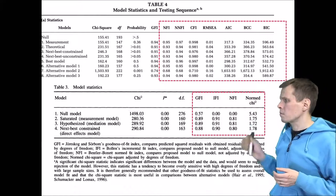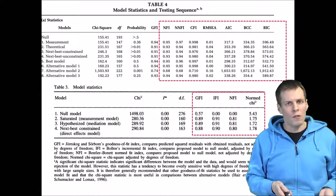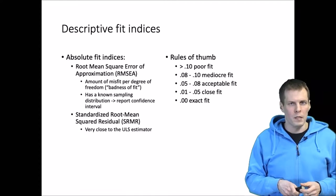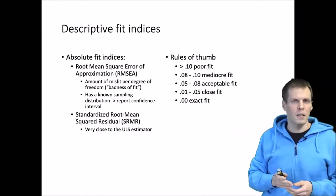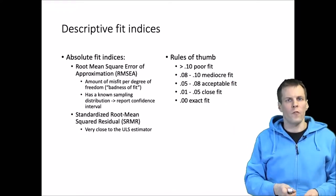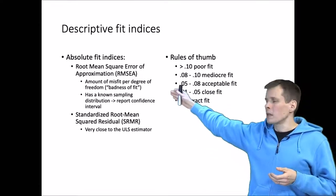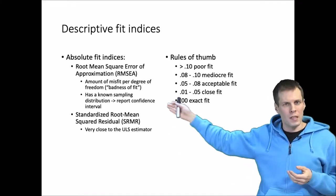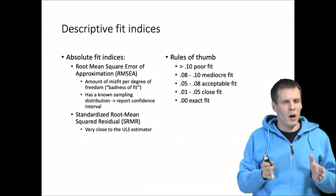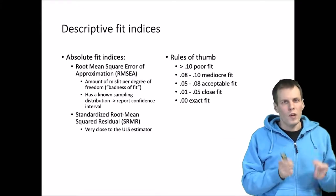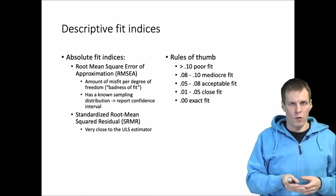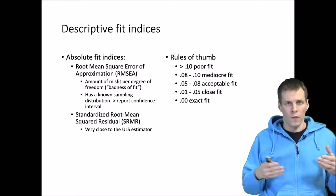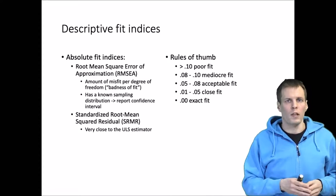So what are these alternative fit indices? They fall into two families. The first family is descriptive indices, which quantify the degree of misfit. RMSEA and SRMR are the two most commonly used ones. SRMR is basically the average residual covariance in the residual covariance matrix — essentially a geometric mean — and if the average degree of residuals is small, we conclude that the model fits okay.